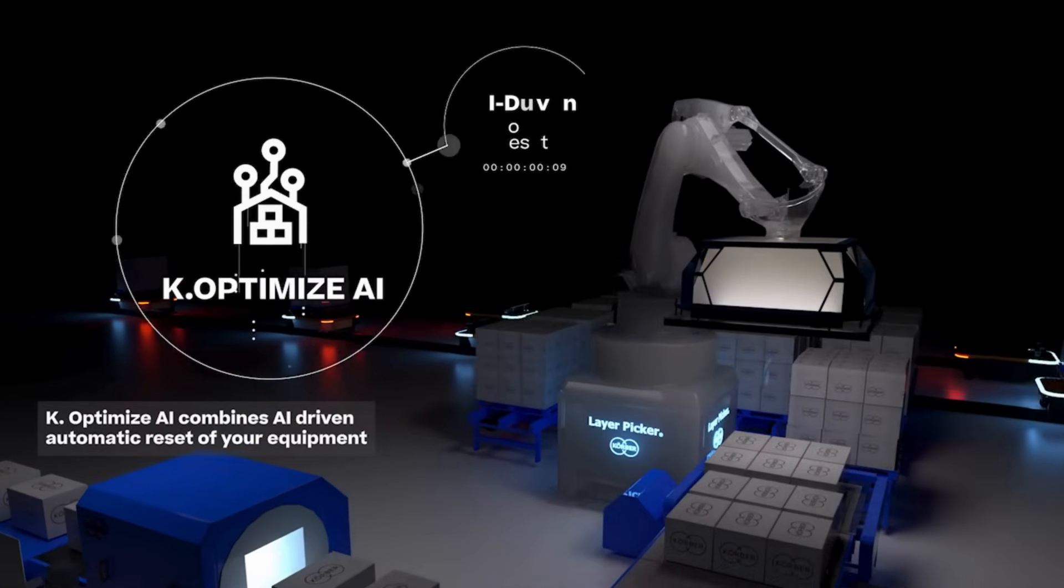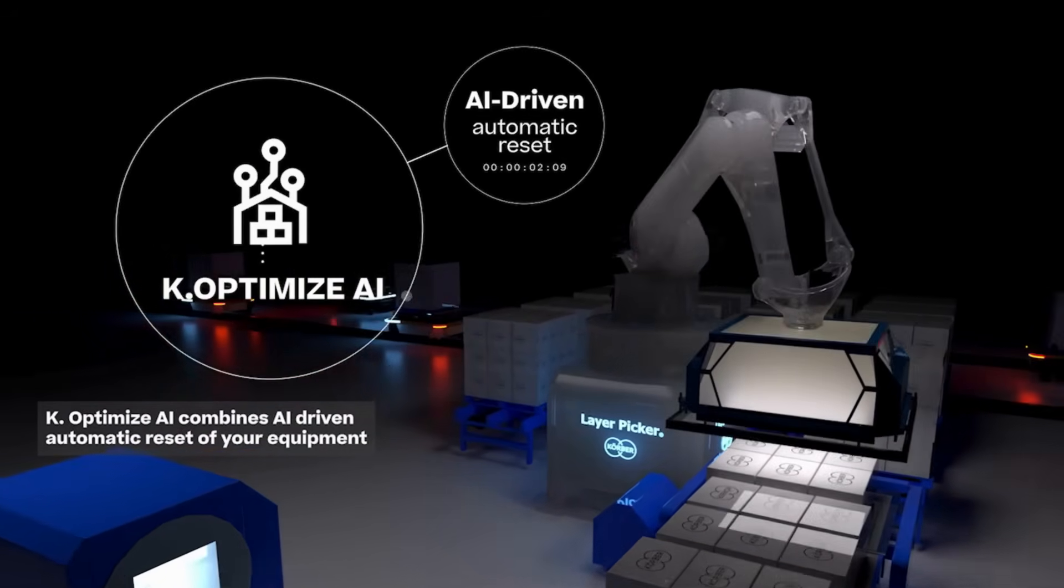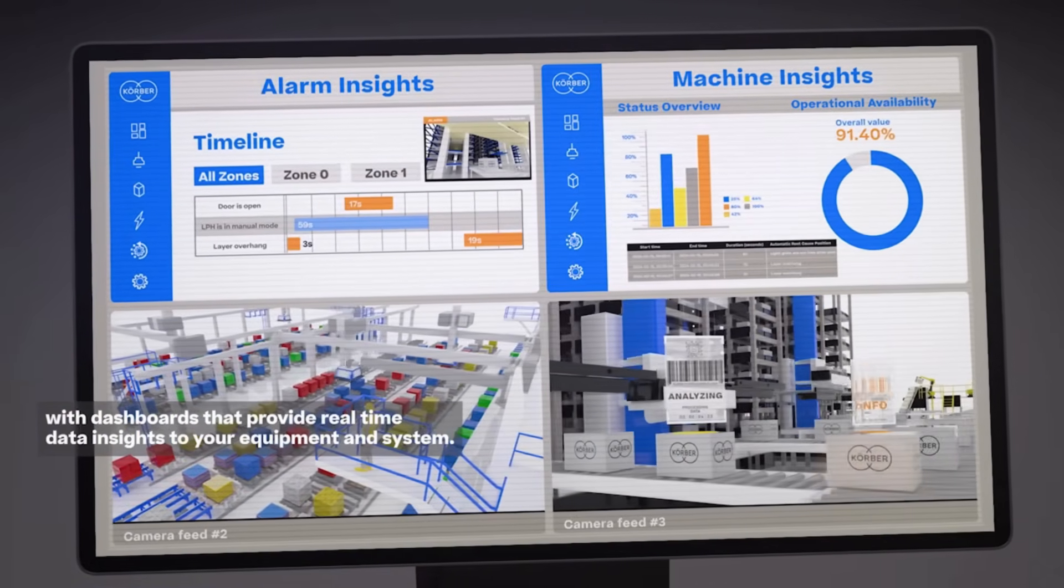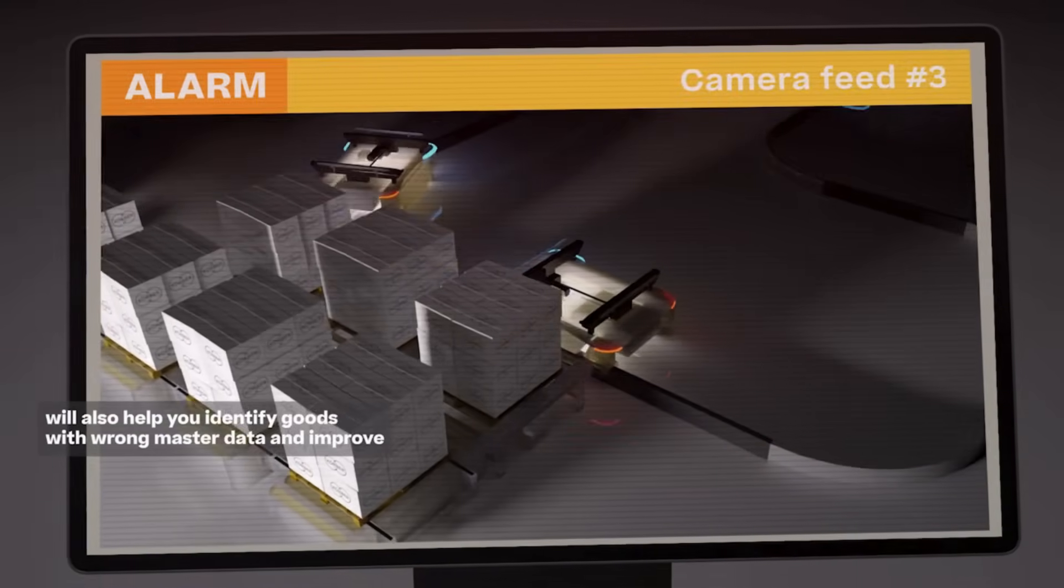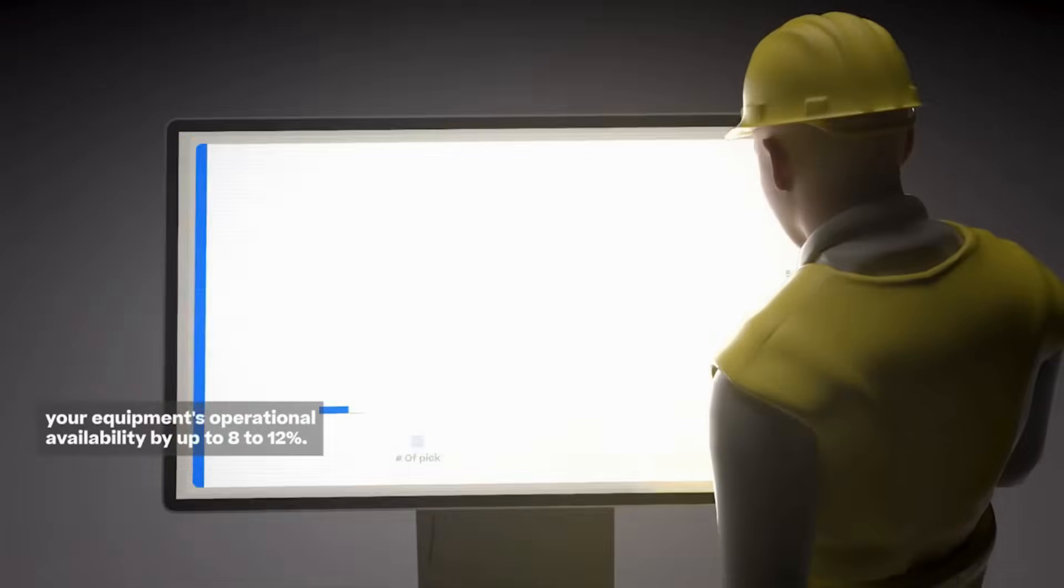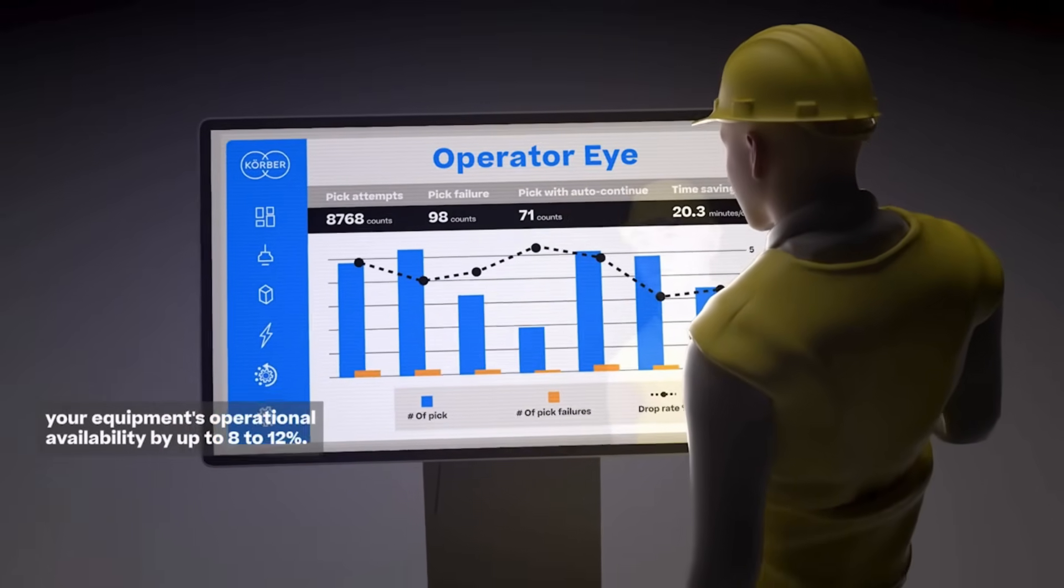K-Optimize AI combines AI-driven automatic reset of your equipment with dashboards that provide real-time data insights to your equipment and system. K-Optimize AI will also help you identify goods with wrong master data and improve your equipment's operational availability by up to 8-12%.